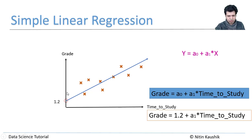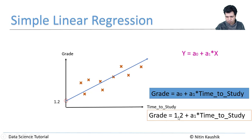So the formula becomes: grades equals 1.2 plus a₁ into time to study. a-naught is the constant where the best fit line cuts the vertical axis — the grades axis — and as shown in the orange box, the equation is grades equals 1.2 plus a₁ into time to study.